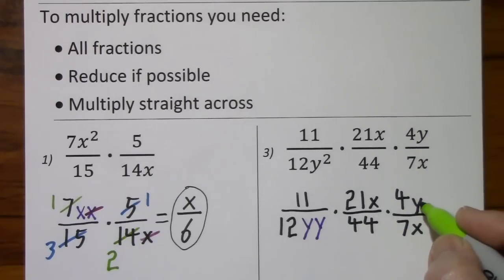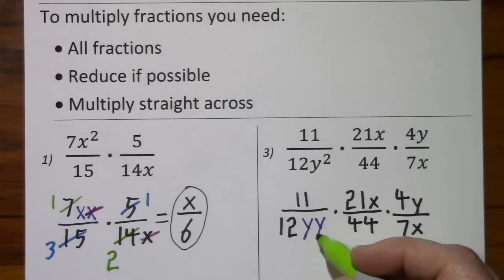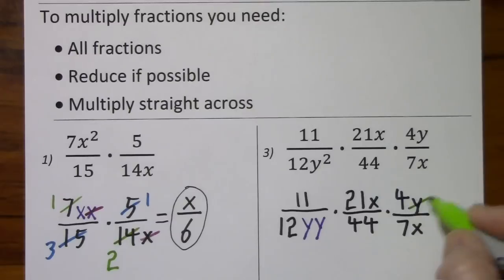Now let's deal with the variables first. You have one y in a numerator, you have two of them down here in the denominator. Let's cancel the one that we have the least of. y cancels y, x cancels x.